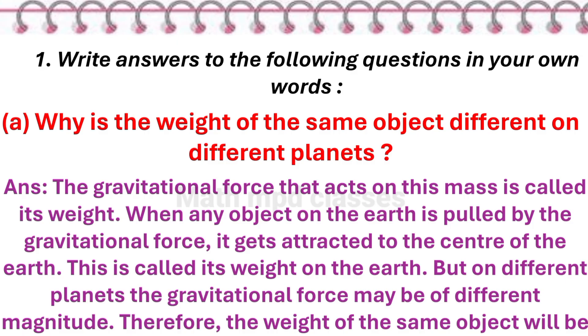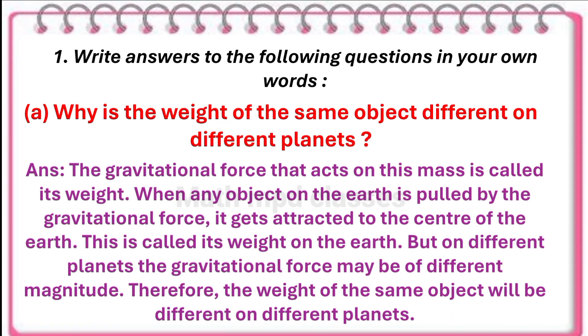Answer: The gravitational force that acts on this mass is called its weight. When any object on the earth is pulled by the gravitational force, it gets attracted to the center of the earth. This is called its weight on the earth.